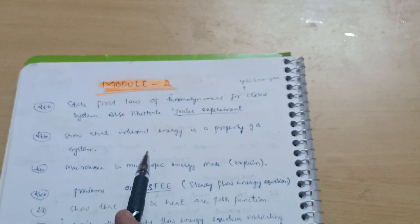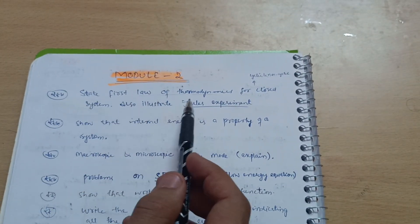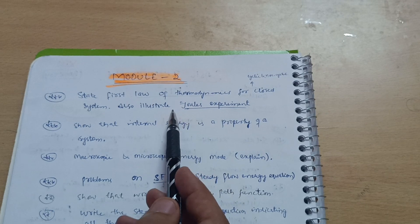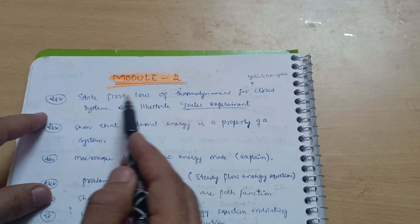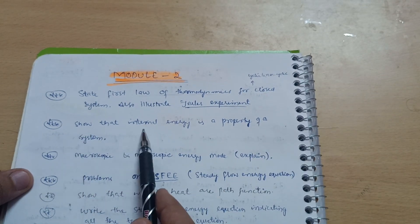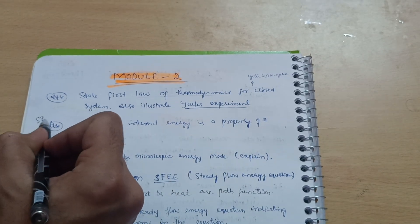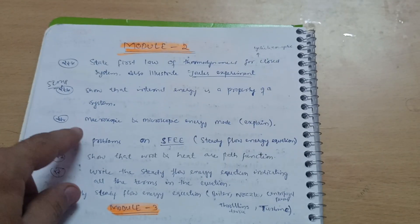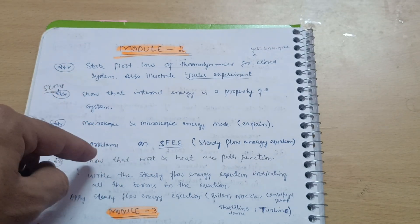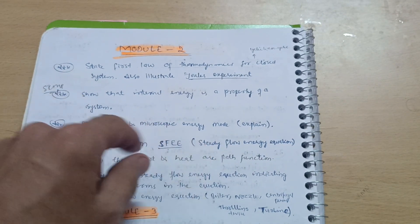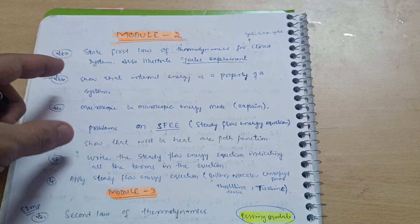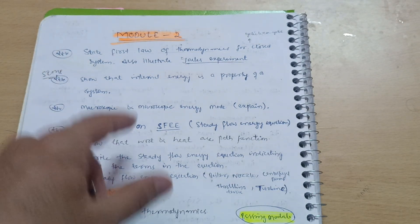In Module 2, you have to focus on: state the First Law of Thermodynamics for a closed system and also illustrate Joule's experiment — this is the most important one. Sometimes they will ask: state the First Law of Thermodynamics for cyclic and non-cyclic processes. Next super important question: show that internal energy is a property of a system. Also explain the modes of energy — microscopic and macroscopic energy. Go through problems on the Steady Flow Energy Equation (SFEE), which will definitely help in scoring Module 2.